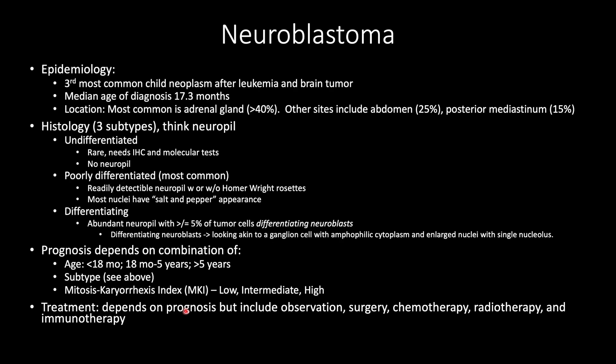Now let's talk about neuroblastoma. Epidemiology: it is the third most common childhood neoplasm after leukemia and brain tumor. The median age of diagnosis is 17.3 months. The most common location is the adrenal gland at over 40%, but other sites include the abdomen at around 25% and posterior mediastinum at 15%. There are three subtypes — to help differentiate them, think about the neuropil. The undifferentiated subtype is rare.